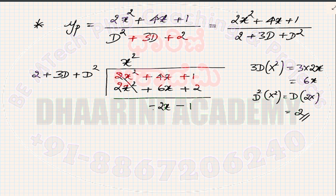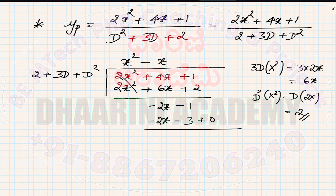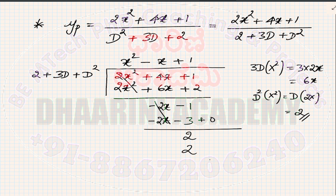Now we have remainder 2. We multiply by +1: 2 × 1 = 2, and 3d × 1 = 0 since differentiation of a constant is 0. So 2 + 0 + 0 = 0, giving remainder 0. After the division is complete with no remainder, the answer is the quotient obtained in the whole process of division.